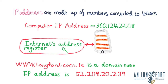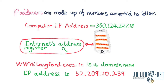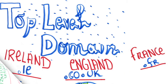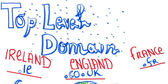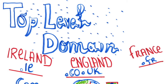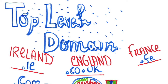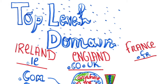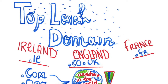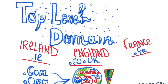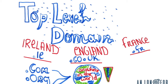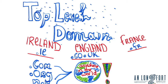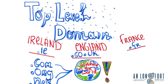For example, the domain name is www.longfordco.ie and the IP address is 52.209.20.239. What does .ie mean? .ie is a top level domain. The abbreviation at the end of a website address is called a top level domain. A website with a connection to Ireland will have a .ie extension, a connection to England has .co.uk, and France has .fr. Addresses ending in .com, .org, or .net are addresses that don't indicate where in the world the server is located.